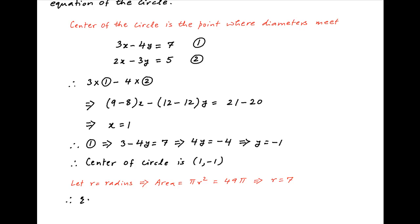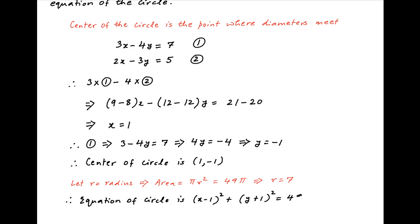So we now have the center of the circle as well as its radius. Therefore, the equation of the circle is x minus 1 whole square plus y plus 1 whole square is equal to 7 squared, or 49.